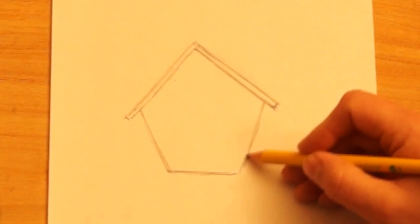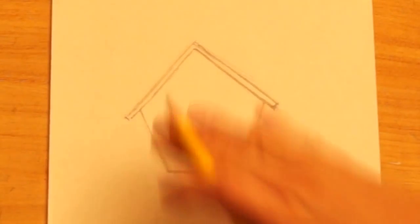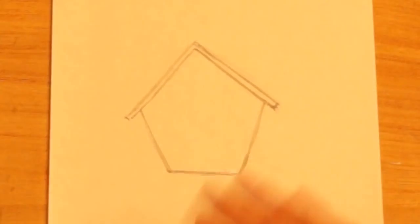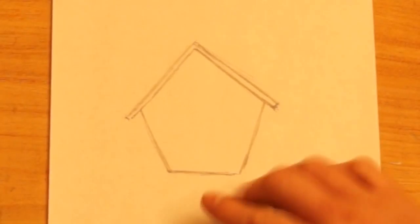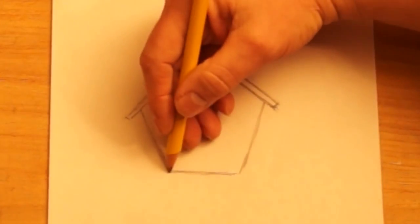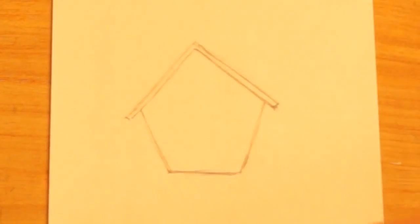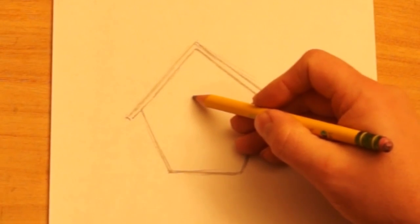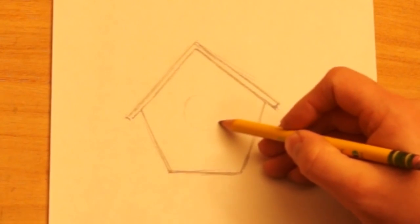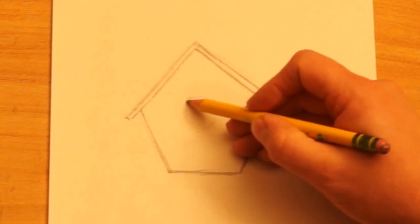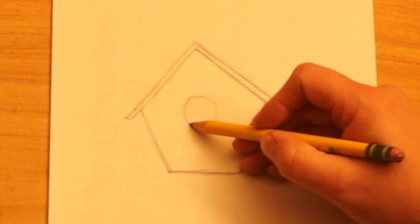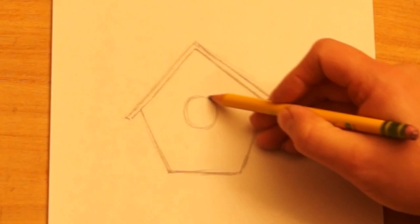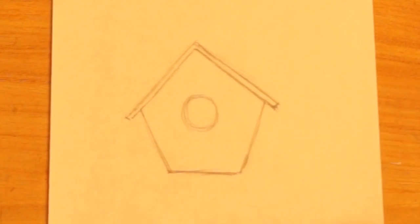So this alone, this could stand by itself as just a flat birdhouse. I'm going to try to make it look like it goes back into space, though. But this could be just a picture of a birdhouse by itself. Let's go ahead and put the entrance in, just a circle or kind of an oval shape, a tall oval, right here in the center.